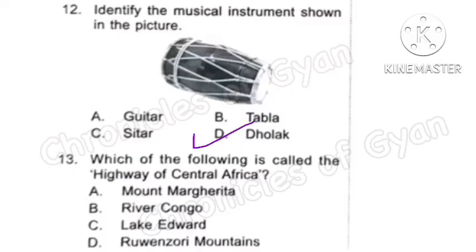Question 13: Which of the following is called the highway of Central Africa? The correct answer is Option B, River Congo. It is called the highway of Central Africa because the entire river is readily navigable — meaning the trade of Central Africa passes through it.